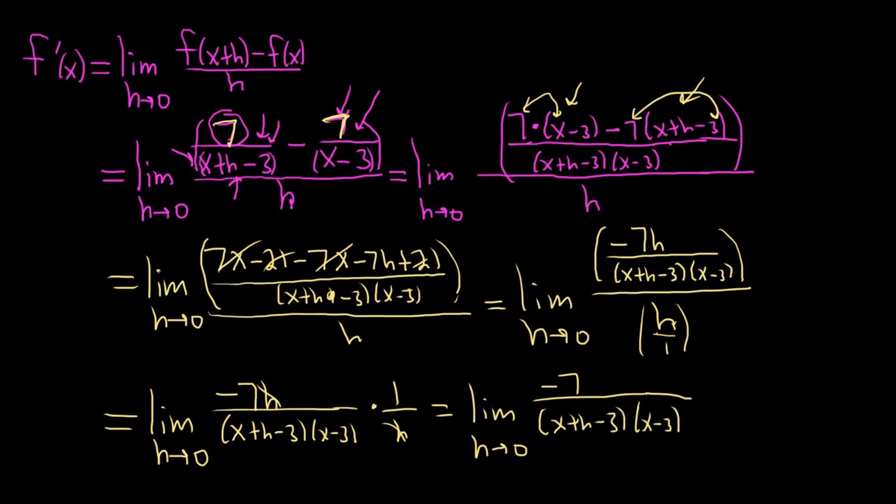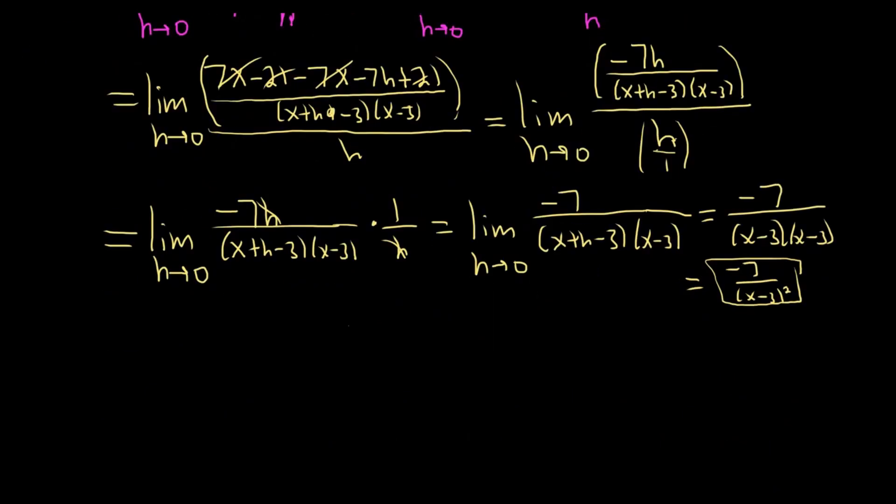And so now we've finally reached a point—a long problem—where we can plug in 0 for the h. So let's do that. Now you drop the limit sign. Negative 7 over, and then it'll just be x minus 3 times x minus 3. So this is negative 7 over x minus 3 squared, and that would be the final answer. It's negative 7 over x minus 3 squared. That would be the derivative.